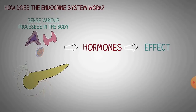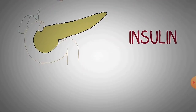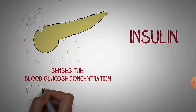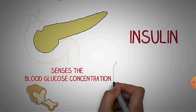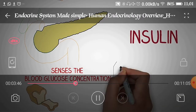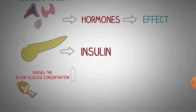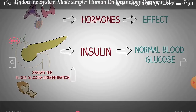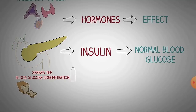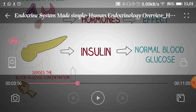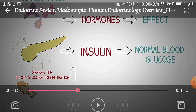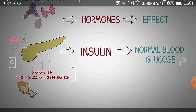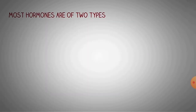The pancreas functions as both exocrine and endocrine; it releases insulin, which senses blood glucose concentration. Whenever you consume food and sugar concentration is too high in the body, it sensitizes the pancreas. Due to the increased level of carbohydrate, a message is sent to the brain, which gives the order to the pancreas to secrete insulin. Insulin normalizes blood glucose in two ways: either by utilizing glucose or by converting glucose to glycogen.